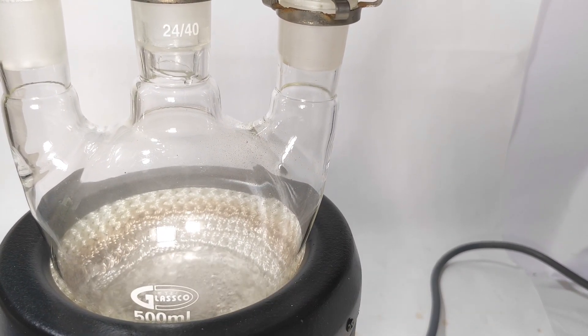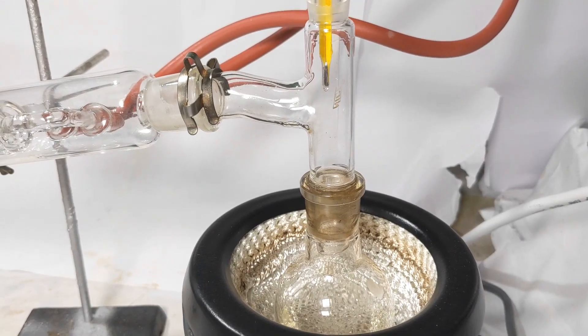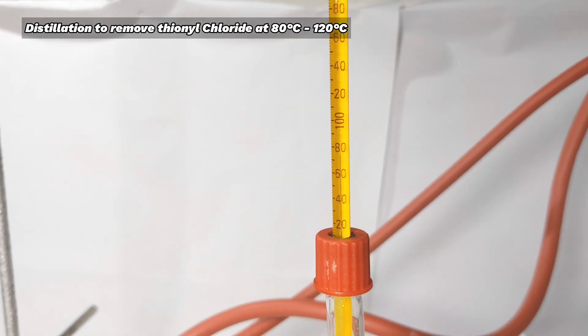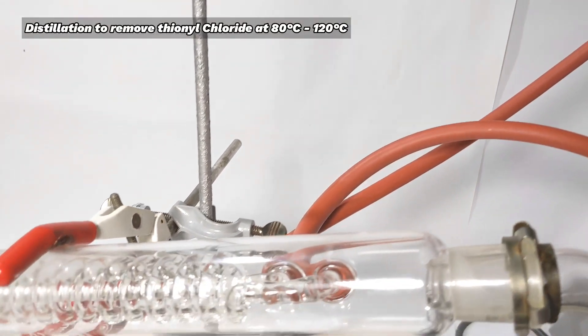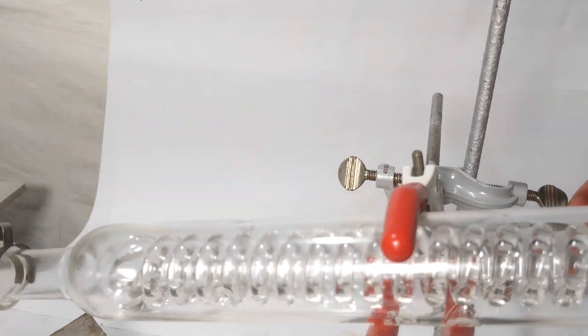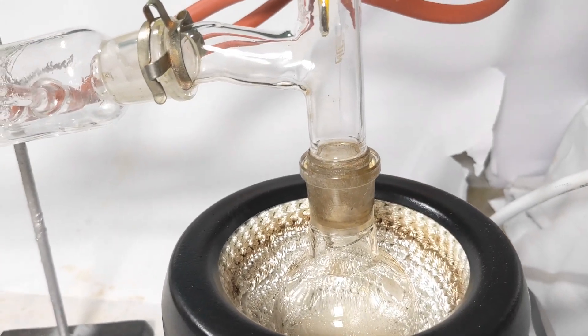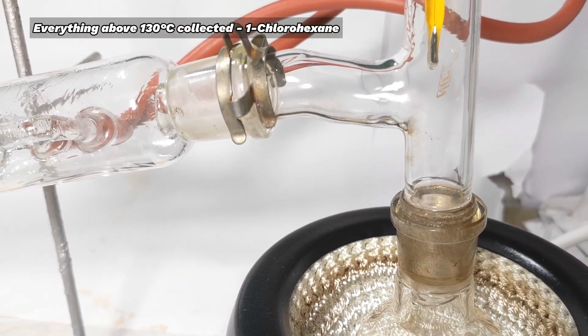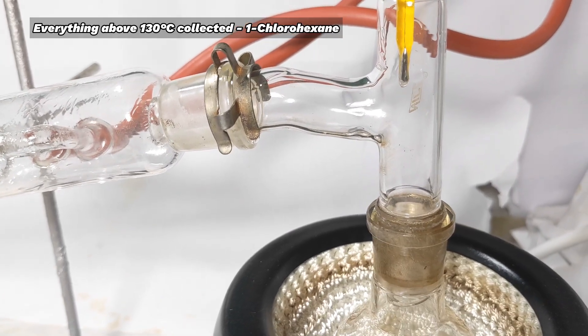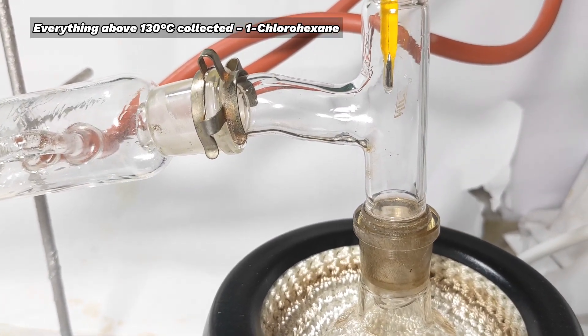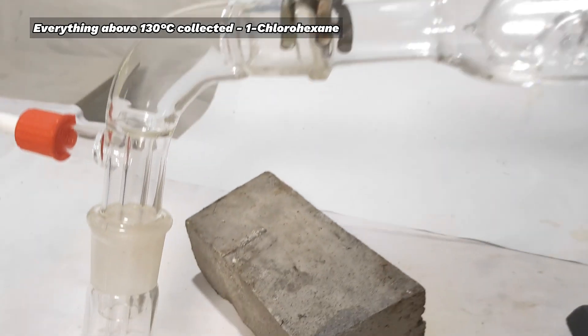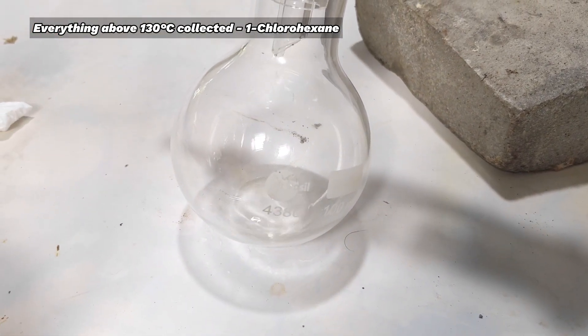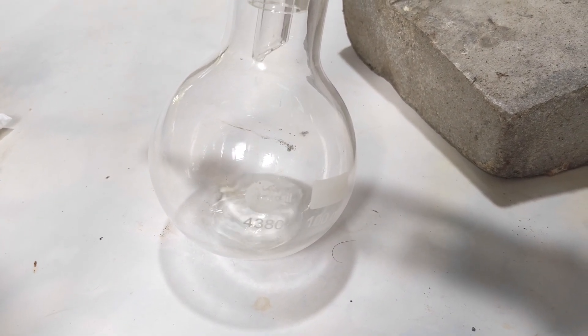The apparatus was then rearranged for distillation and distillation was conducted slowly. Initially thionyl chloride distilled over from 80 degrees C to approximately 120 degrees Celsius. Then the flask at the receiving end was swapped to another clean round bottom flask, and everything that distilled over at 131 degrees C was collected in a receiving flask.